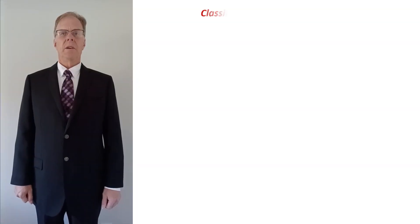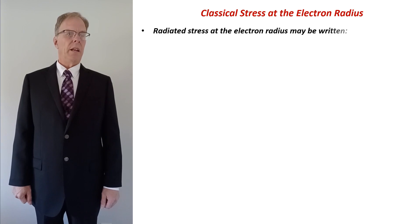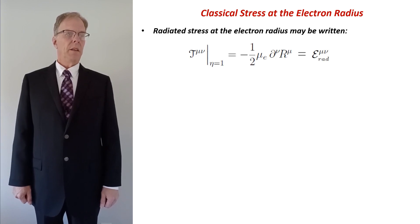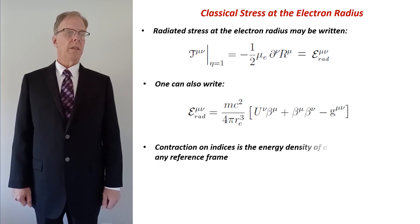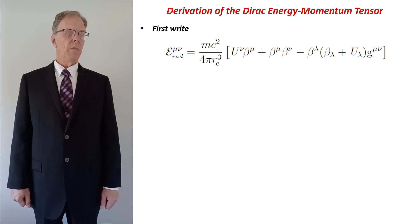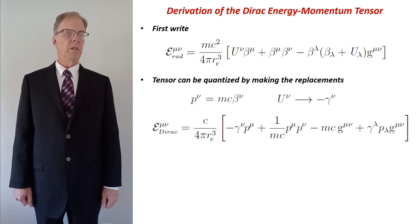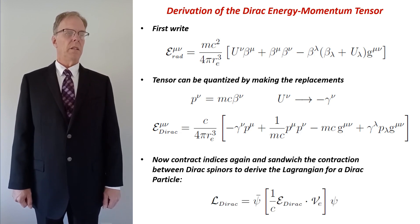Now let's examine the total stress tensor at the electron radius a little more closely. The leftover stress at eta equal one is the tensor E mu nu. This tensor can be written out term by term as shown here. A scalar contraction of indices determines the energy density of the classical electron, which is simply MC squared divided by the volume of the three-sphere. Next, we can quantize E mu nu by introducing the four-momentum and associating the space-like vector U nu with Dirac gamma matrices. The resulting quantized tensor is E mu nu sub Dirac and if we sandwich this tensor between Dirac spinors we derive the Lagrangian for a Dirac particle.